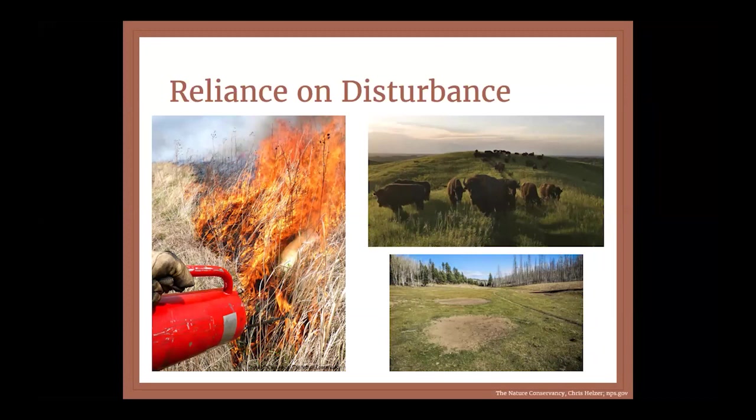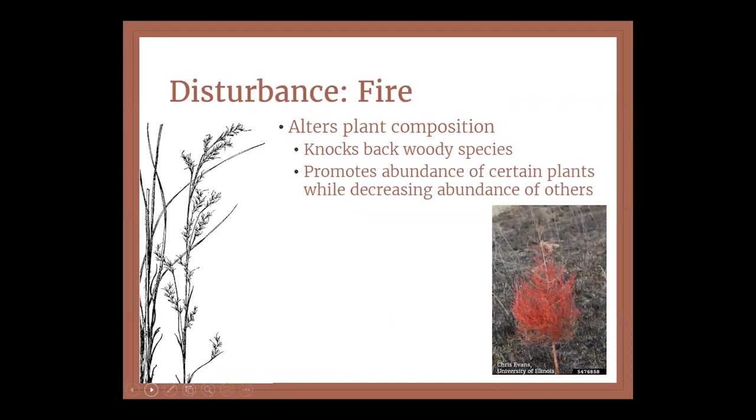Because we've altered the landscape so much, we can no longer have, say, a lightning strike start a fire that burns for miles over a couple of days until it's put out by a rainstorm. So we need to help put that disturbance back on the prairie. But how do each of these disturbances impact the prairie?